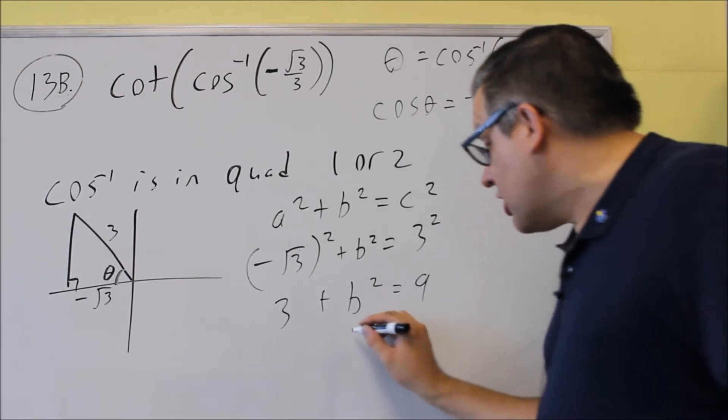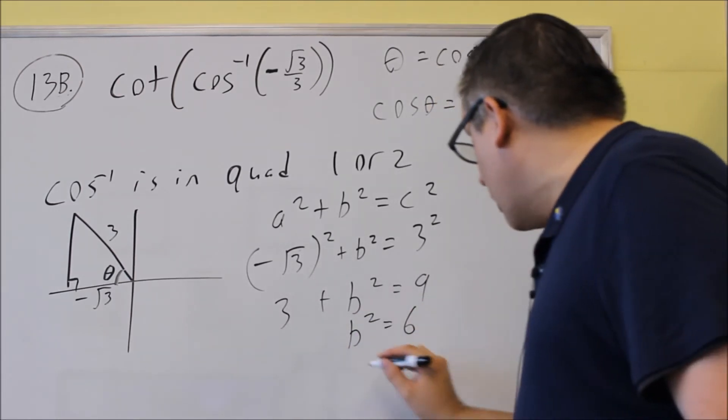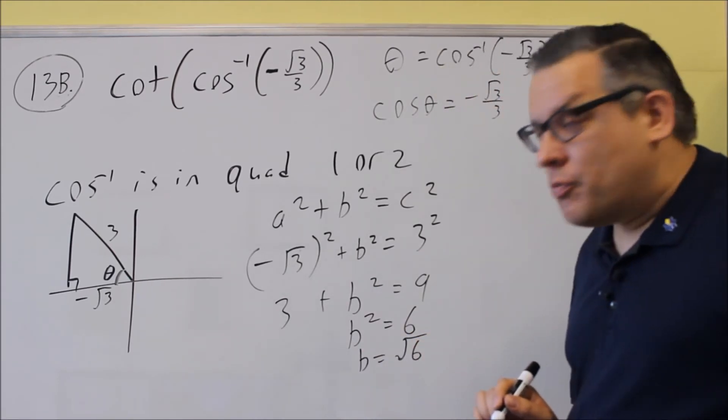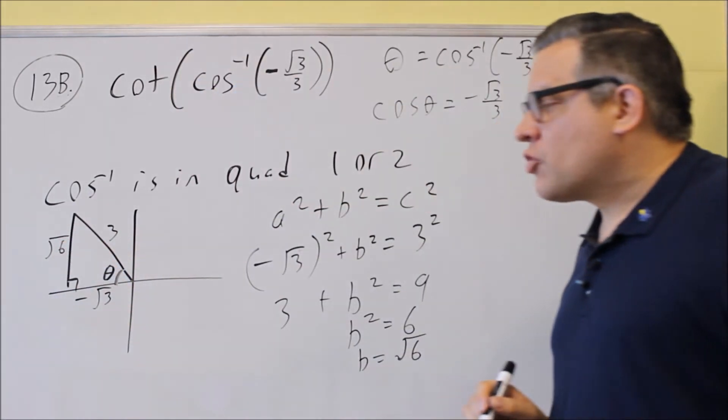We're going to subtract 3 from both sides. b squared is equal to 6. And when you square root that, you'll get the square root of 6 is your b. So, I know right here this is going to be the square root of 6.